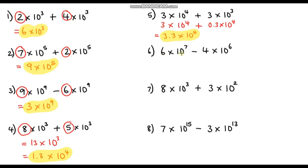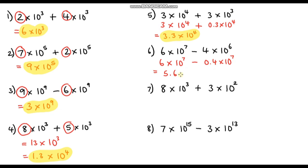Question 6: 6 times 10 to the power 7 minus 4 times 10 to the power 6. Write the larger power first: 6 times 10⁷. Rewrite the second number with power 10⁷ — we multiplied the power by 10, so divide the base: 4 ÷ 10 = 0.4. Now subtract base numbers: 6 minus 0.4 is 5.6. Answer: 5.6 times 10 to the power 7.